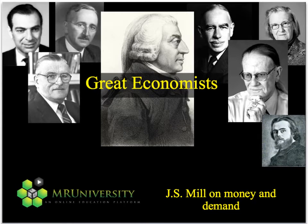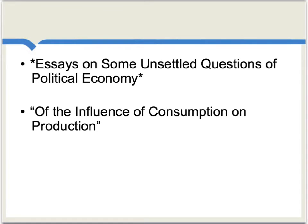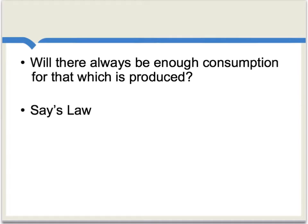Let's now consider some writings by John Stuart Mill on the macroeconomics of money and also demand. We're again turning to Mill's book Essays on Some Unsettled Questions of Political Economy and the particular essay 'The Influence of Consumption on Production.' Mill was writing this in his early 20s, and that's remarkably impressive. Mill was trying to answer a long-standing question in classical economics, namely whether there will always be enough consumption for that which is produced.